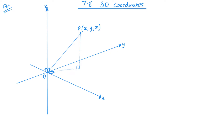That gives me my right angle triangle. This bottom side can also be found using Pythagoras — it creates a right angle triangle within the X-Y plane. So we use Pythagoras to find that bottom side, and then using that bottom side and the vertical side, I can use Pythagoras again to find the distance from this point to the origin.